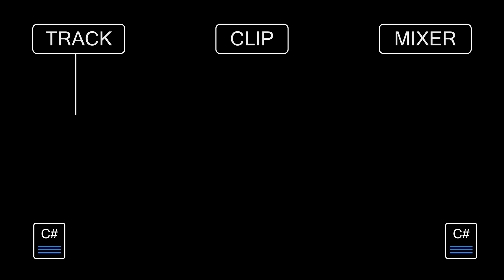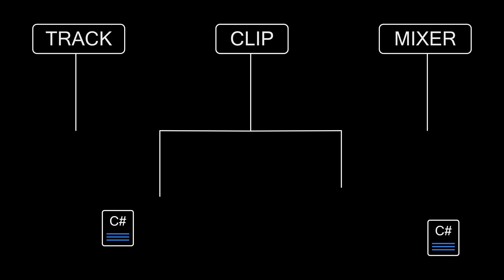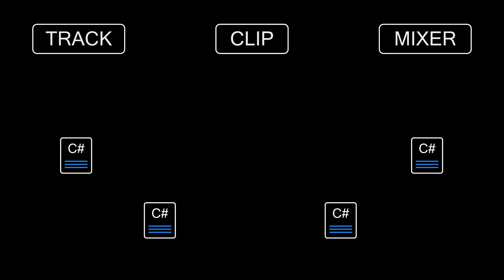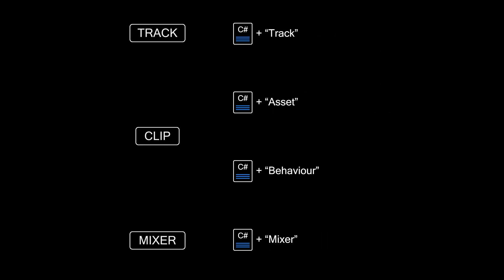Even though there are three distinct components — a track, a clip, and a mixer — we actually need to create four scripts. This is because a clip requires two scripts: one for the data and one for the logic. A good practice is to set the base name for these scripts and then apply suffixes based on their role.